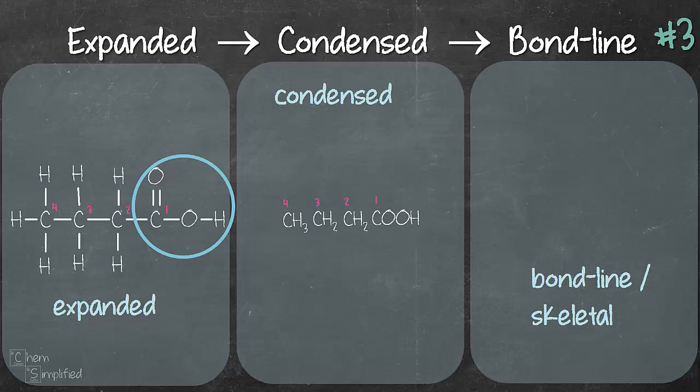Okay. Moving on to bond line or skeletal. So this is pretty easy as well. Same like what we did for the second example. We count how many carbons we have in our skeleton. And in this case, we have four carbons. So I'm going to draw a zigzag containing four points like this. One, two, three, four. Okay. Now on the first carbon, I am going to attach my C double bond O. And then I'm going to attach my OH. And that's it.